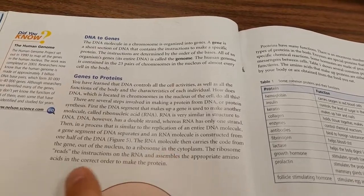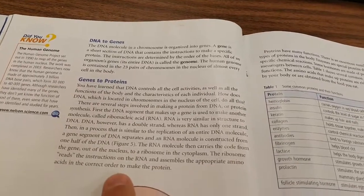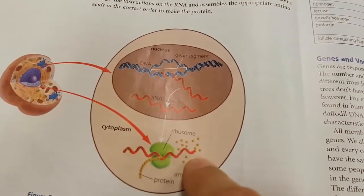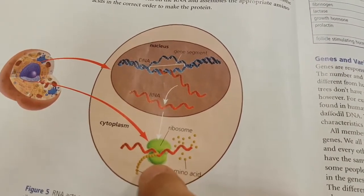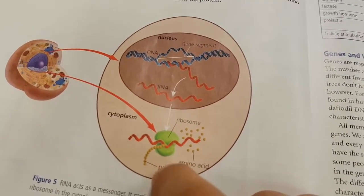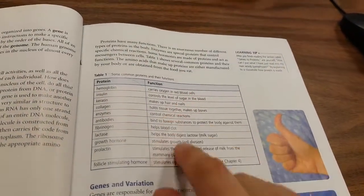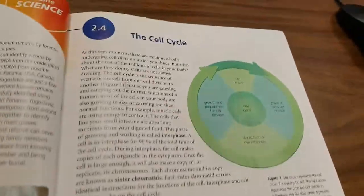That ribosome then essentially reads the instructions of the RNA and assembles the appropriate amino acids. This piece of RNA, which is red in this picture, runs through the ribosome, which is green in this picture, the yellow amino acids are put into place, and eventually a protein is created. That's called protein synthesis. These are different kinds of proteins that we have in our body, but we're not going to be tested on this. So essentially then we went on to the cell cycle.